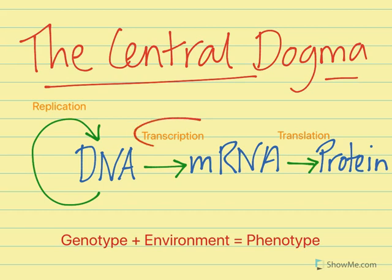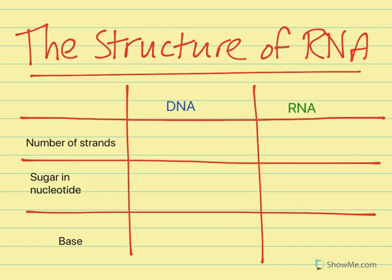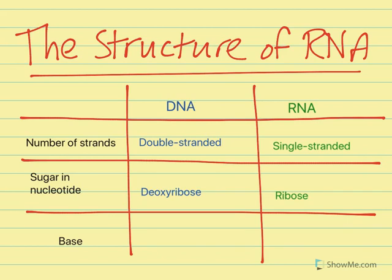Today we are looking at transcription. Transcription involves the production of mRNA, or messenger RNA, using a DNA strand as a template. Let's have a look at the differences between DNA and RNA. DNA is double stranded whereas RNA is single stranded. The sugar in the nucleotides of DNA is deoxyribose sugar, but in RNA it's ribose sugar. In DNA thymine is present, but in RNA it's uracil instead of thymine.